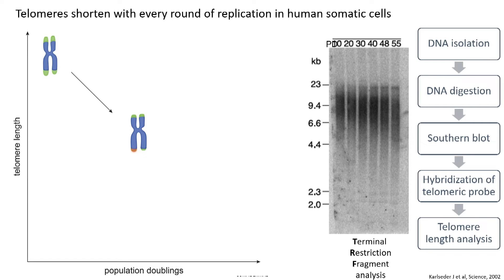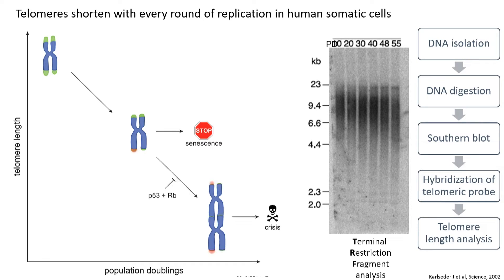If telomeres get extremely short, they get recognized by the DNA damage response and trigger a P53-RB-dependent checkpoint that leads to permanent cell cycle arrest called replicative senescence. However, if cells are deficient for P53-RB, they continue to divide despite having short telomeres, telomeres shorten even further, and at some point these critically short telomeres are fusion-prone, causing cells to die in a second proliferative barrier called replicative crisis. Senescence and crisis are therefore two major barriers restricting the replicative capacity of human somatic cells.